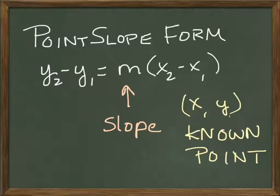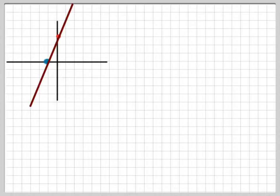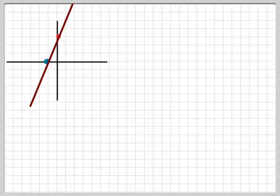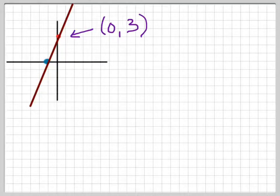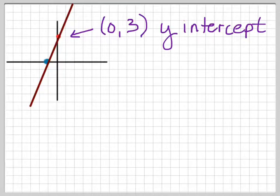Here's a graph containing two points: (-1, 0) and (0, 3). Notice that the point (0, 3) is the y-intercept. I'm going to write the equation for this function first using slope-intercept form, because we have a y-intercept that's easy to read right off the graph — which is 3. That's our y-intercept.